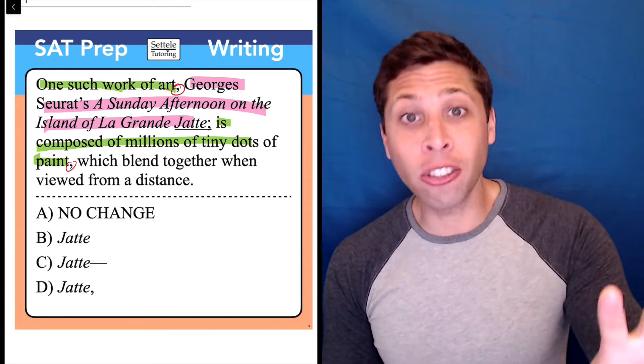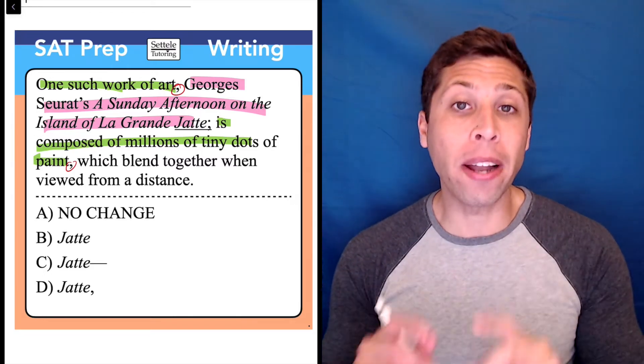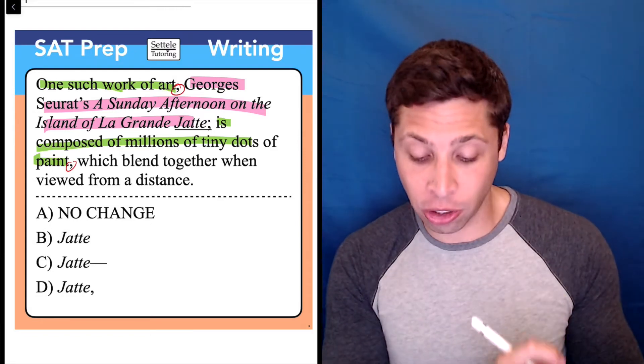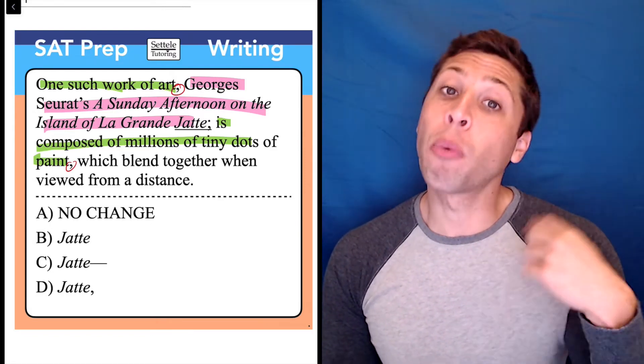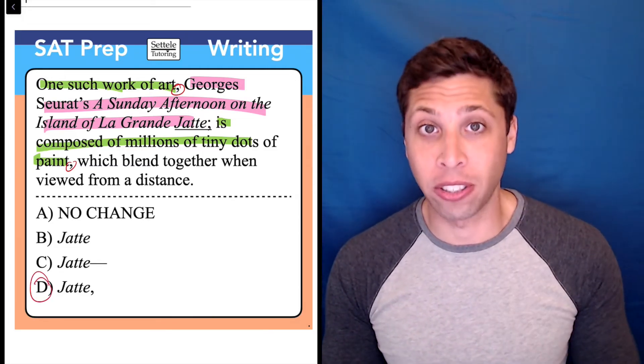If we're going to insert this specific example in the middle of that sentence, we had better show that separation, show that break with punctuation. The first time we break away, we use a comma, so when we come back, we should also be using a comma, and that is why choice D is the answer.